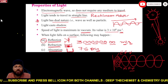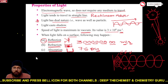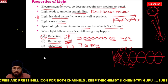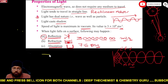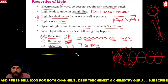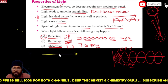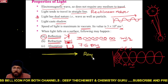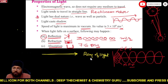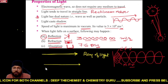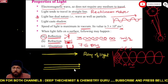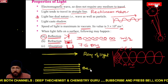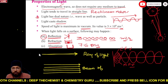Before discussing reflection, you need to know a few things. Light travels in a straight line, so we represent it with an arrow — this is called a ray of light. If we show multiple rays together, that is called a beam of light. This is a parallel beam of light. For simplicity, we use the ray of light.